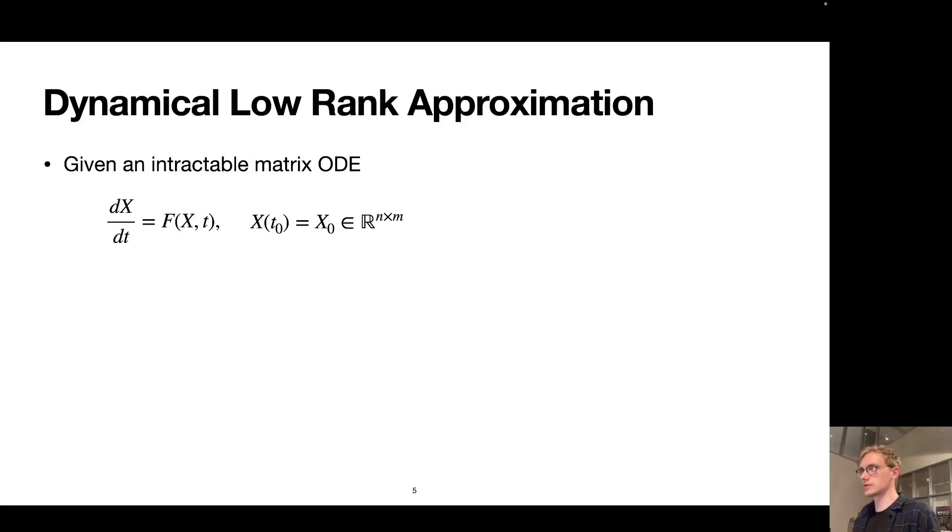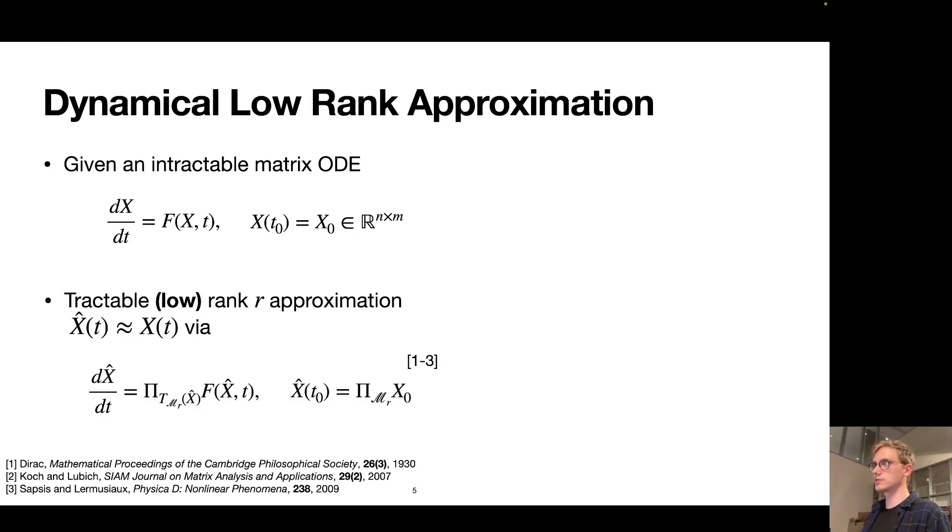Let me introduce the concept of dynamical low-rank approximation quickly. The setting is that we are given some intractably large explicit matrix valued ODE. Note in particular that this framework includes the cases I just talked about. This could describe a semi-discretized PDE model, alternatively some sort of data stream where the right-hand side just encodes how the data, for example frames of a movie, changes over time. Assuming that the solution of this ODE admits a good rank R approximation at all instances of time, dynamical low-rank approximation attempts to identify this approximation via this alternative dynamical system.